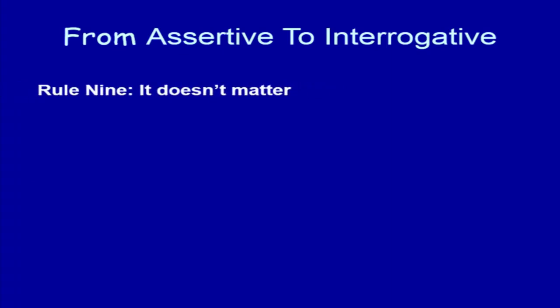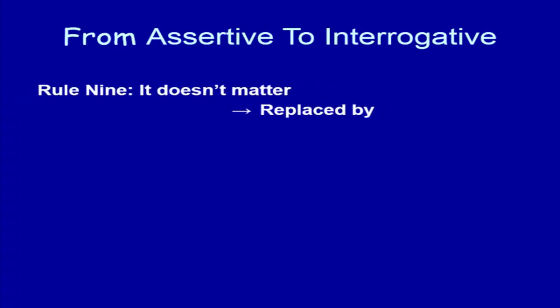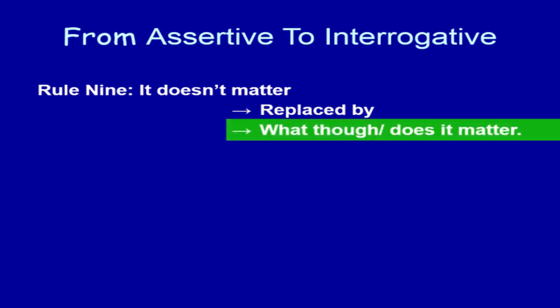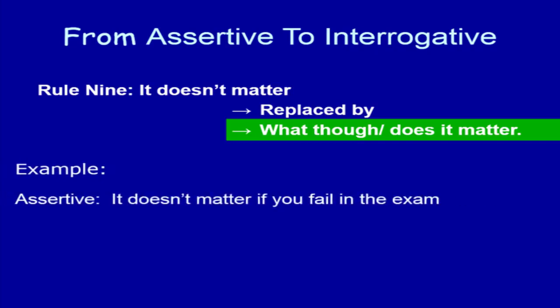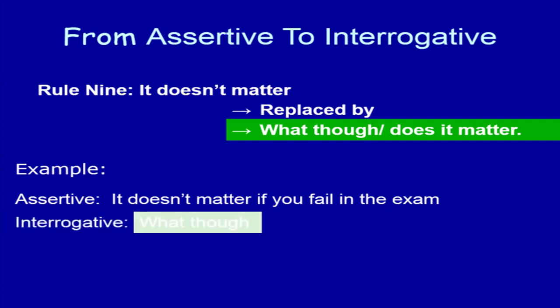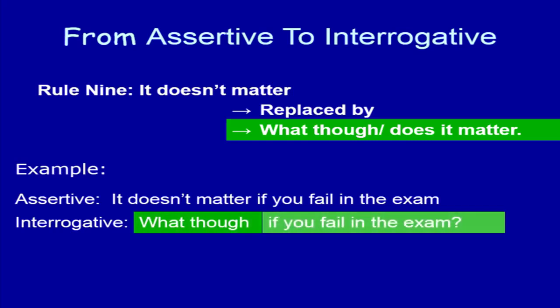Rule number 9. 'It doesn't matter' is replaced by 'What though does it matter?' In the interrogative sentence, write 'What though does it matter?' in place of 'It doesn't matter.' Look at the example: 'It doesn't matter if you fail.' In the interrogative sentence, in place of 'It doesn't matter,' write 'What though,' then write the rest part of the sentence and use the sign of interrogation.